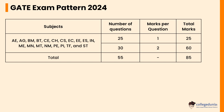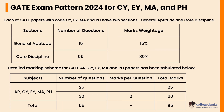Of the 55 core discipline questions, 25 questions will carry one mark each while 30 questions will carry two marks each. Let's check the GATE exam pattern 2024 for CY, EY, MA, and PH.